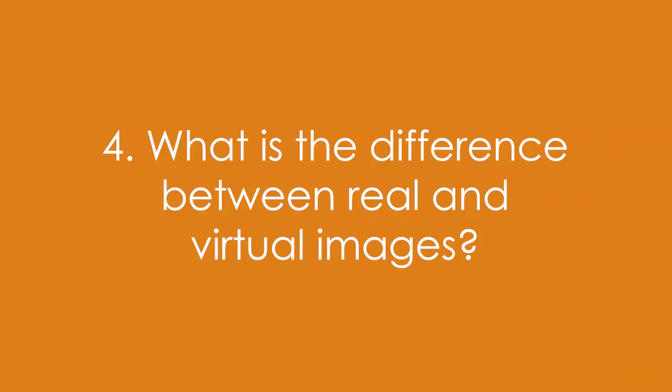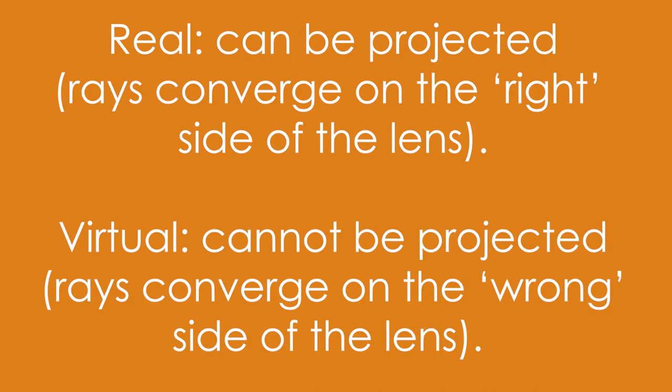What is the difference between real and virtual images? Real images can be projected. That means they will actually converge in reality. Virtual image cannot be projected because the rays will diverge. So that means they'll converge on the wrong side of the lens.